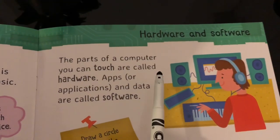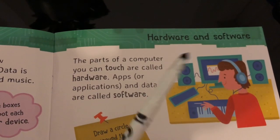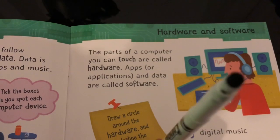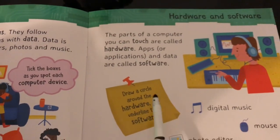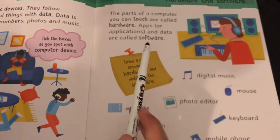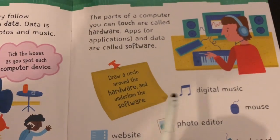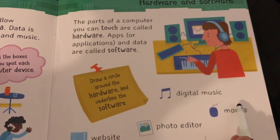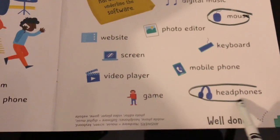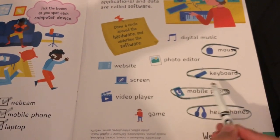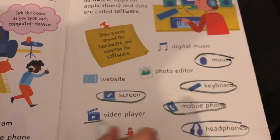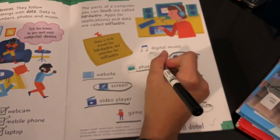The parts of a computer you can touch are called hardware. Apps or applications and data are called software. So what was Minecraft - comment below! Draw a circle around the hardware and underline the software. Hardware includes things you can touch: a mouse, headphones, a keyboard, a mobile phone, a screen. Software includes: video player, game, photo editor, website, digital music. Well done, guys!